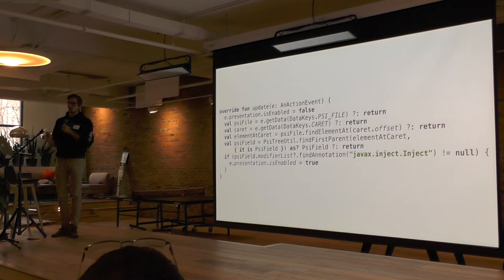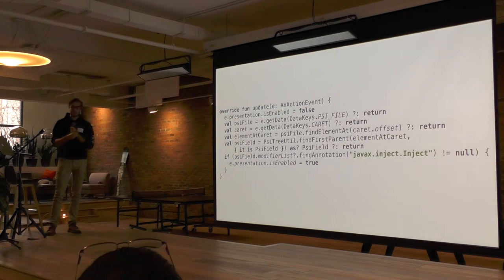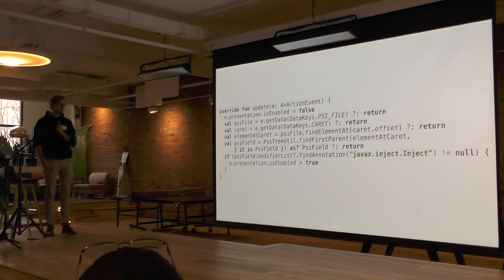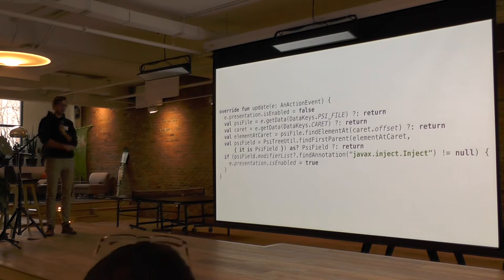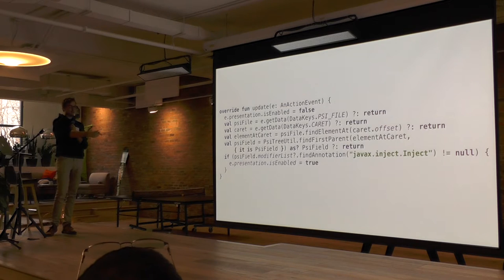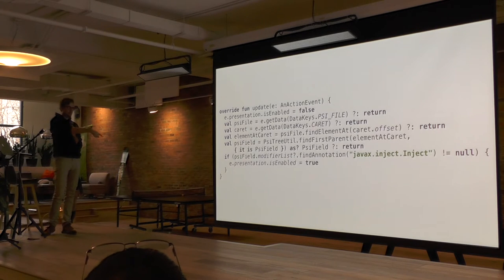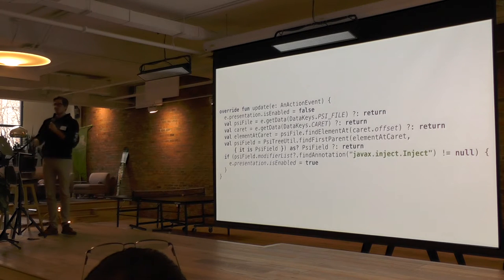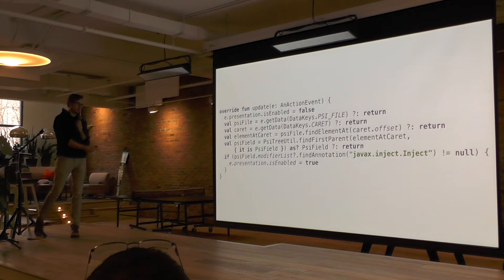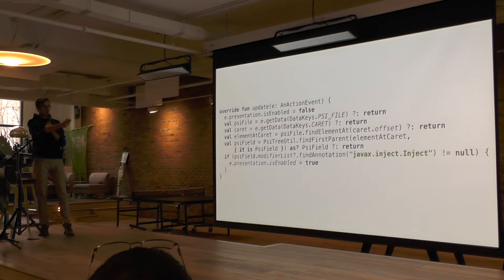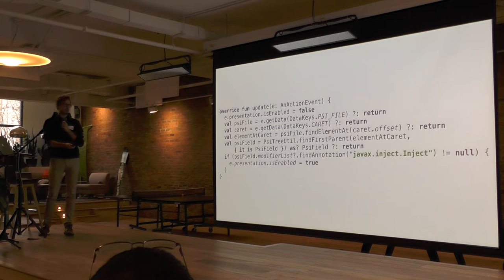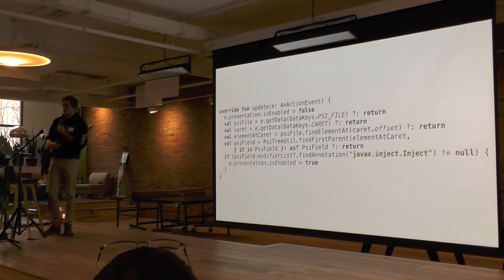Next we check if the PSI field has the @Inject annotation, because we don't want to perform our action on just regular class fields. You do this by looking at the modifier list — a Java-specific API on PSI field — and finding annotations by passing the fully qualified annotation name. So we check if it has the @Inject annotation, and if it does, we want to perform the action. The first line said 'don't run,' but if you get all the way to the end, you do.